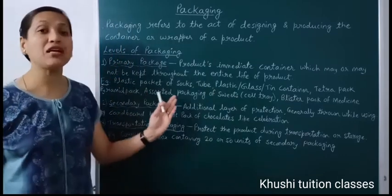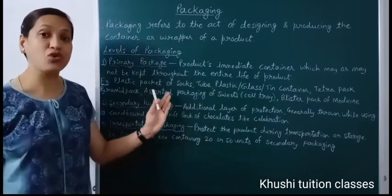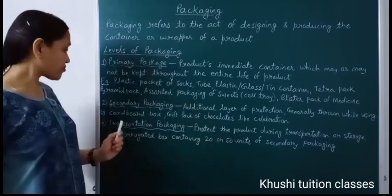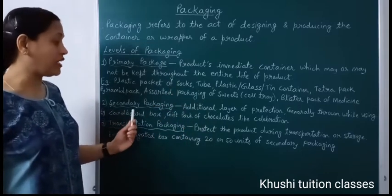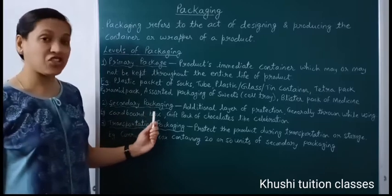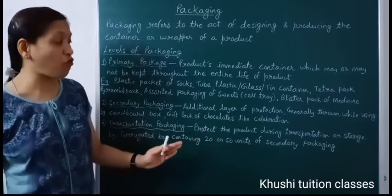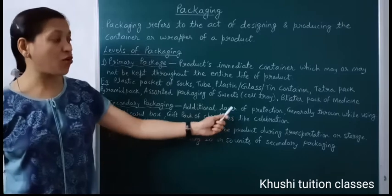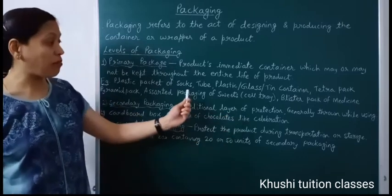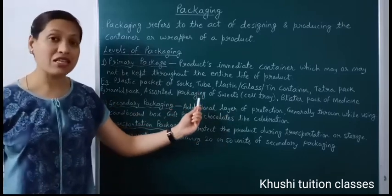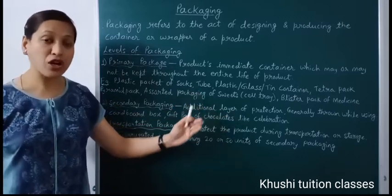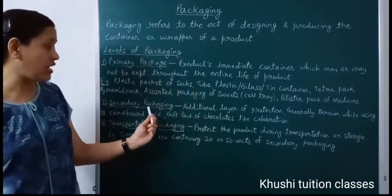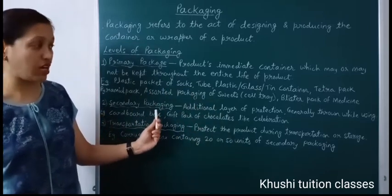So there are different types of primary packaging used for different types of products. Now the second is secondary packaging — it is the second level of packaging. This is an additional layer of protection. हमने primary pack में product को pack कर दिया, अब product को additional layer of safety देने के लिए secondary packaging होती है।